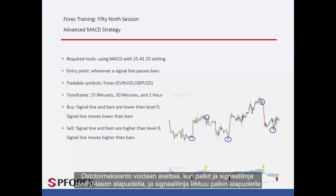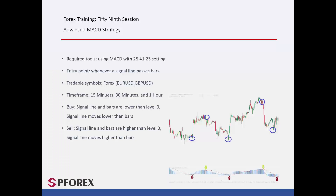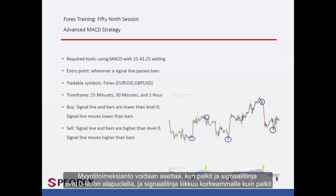A buy order can be placed when bars and signal lines are under level 0, and the signal line moves under the bars. A sell order can be placed when bars and signal line are above level 0, and the signal line moves higher than the bars.